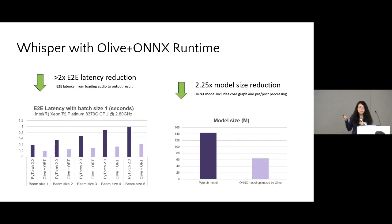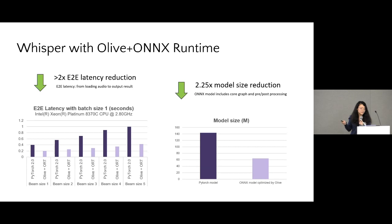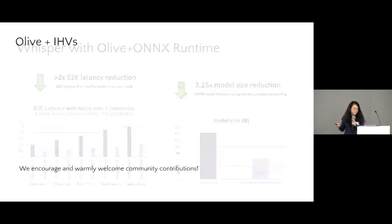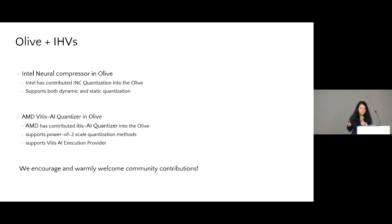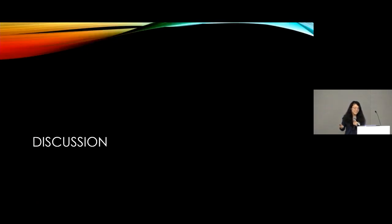Let's look at our benchmark using Olive and ONNX Runtime for optimizing the Whisper model. As you can see, there is a remarkable reduction in end-to-end latency by over two times, as well as a decrease in model size by over two times. Olive offers a unified framework for industry experts to plug in optimization innovations — NVIDIA and AMD have independently integrated their innovations into Olive, so you can access the Intel Neural Compressor quantizer and AMD's AI quantizer in Olive with an easy user experience.